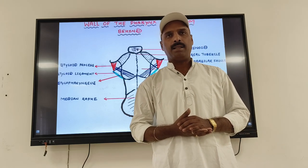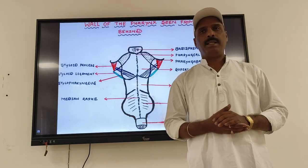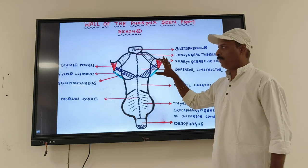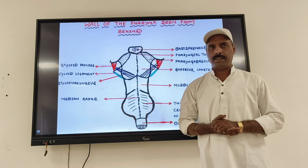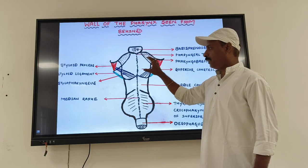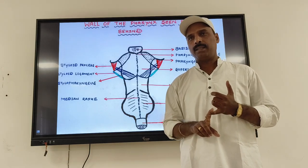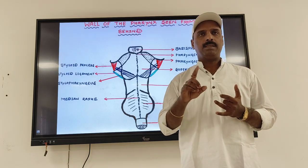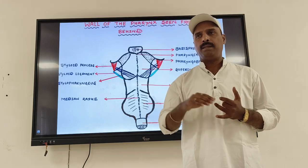Now the preliminary remarks about the muscles of the pharynx. First point: the muscles of the pharynx are called constrictor muscles and they are three in number. We get a right side and left side, and in the midline you have the superior constrictor, middle constrictor, and inferior constrictor. This is the first preliminary remark — the pharynx as a wide muscular tube is formed by these three muscles.